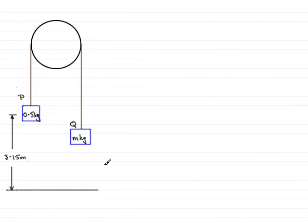Now, you can see that I've drawn the diagram that we're given and we have the particles p and q, mass 0.5 kilograms and q with a mass of m kilograms.